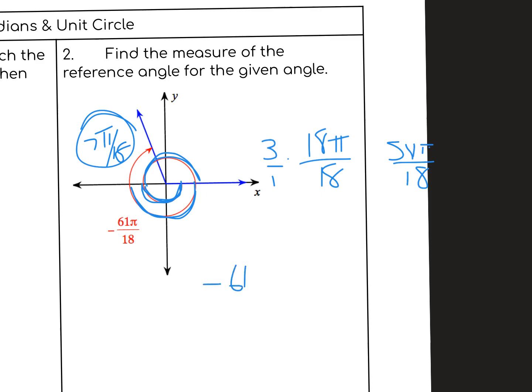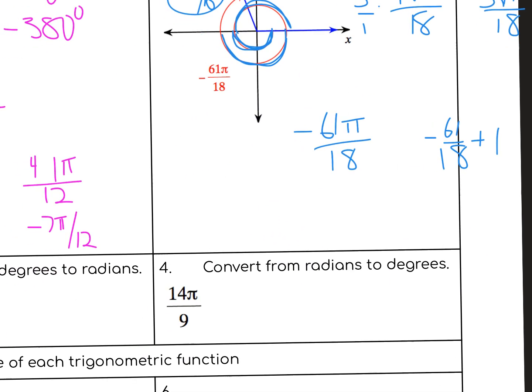Another way would be to just take the negative 61π/18, ignore the pi, and do negative 61 over 18, then add 2 — or add 1; it doesn't really matter, just start adding 1. If I get my calculator out and say negative 61/18 plus 1, I get negative 43/18. If I add 1 again, I get negative 25/18, then negative 7/18. So negative 7π/18 would get you there also. I'm sure there are other ways — those are just ways that pop into my brain.